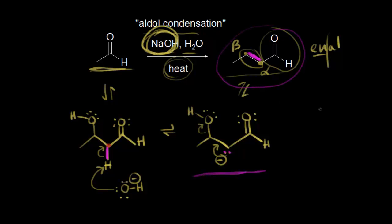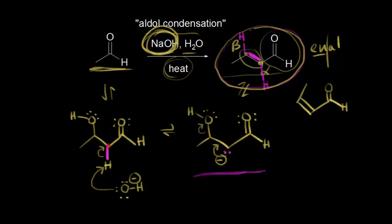In terms of the product, this enal is the major product and it is the trans product — the two hydrogens across the double bond are on opposite sides. You would form a small amount of the cis product as well, but the cis product is the minor product because it has more steric hindrance than the trans product. The trans product has decreased steric hindrance, and it's the one your professor will most likely want on an exam.